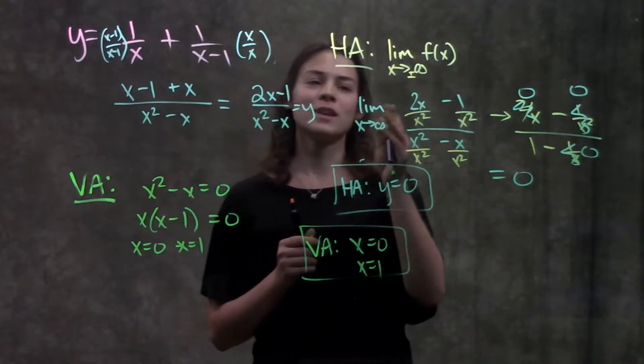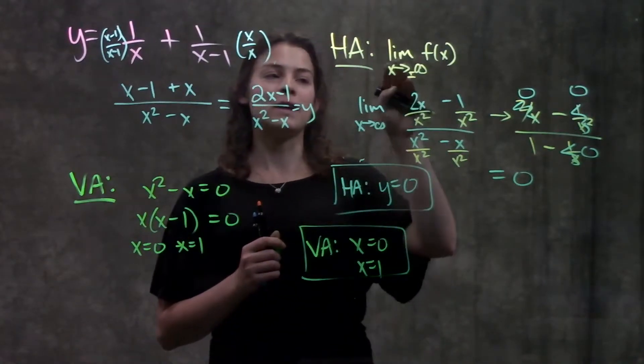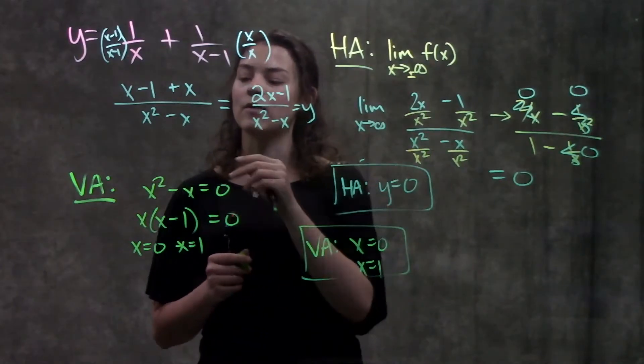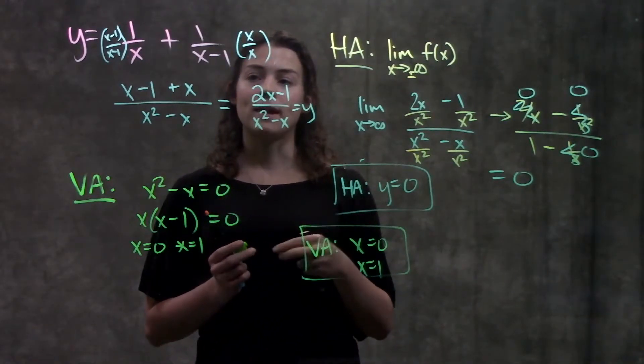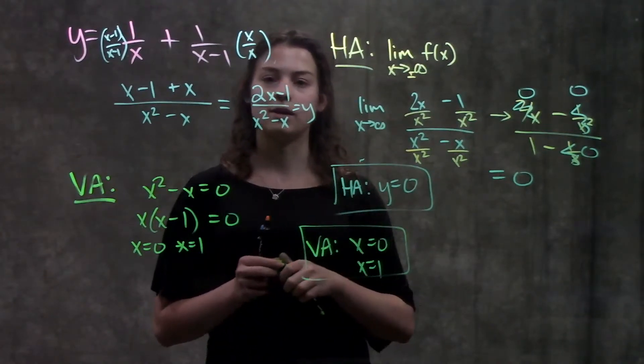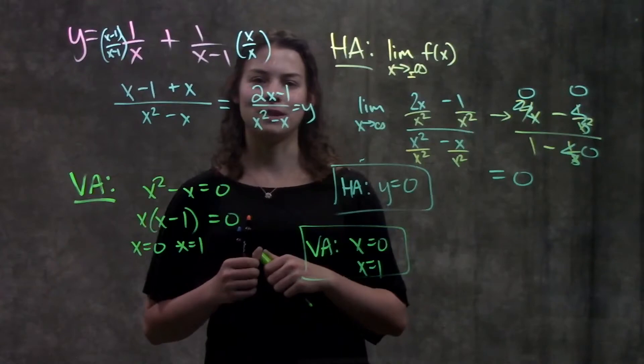So remember for horizontal asymptotes you find them by finding the limit as x approaches both positive and negative infinity and for vertical asymptotes you solve for it by finding wherever the function is undefined. When you have fractions that's just wherever the denominator equals 0. And that's it for this problem.